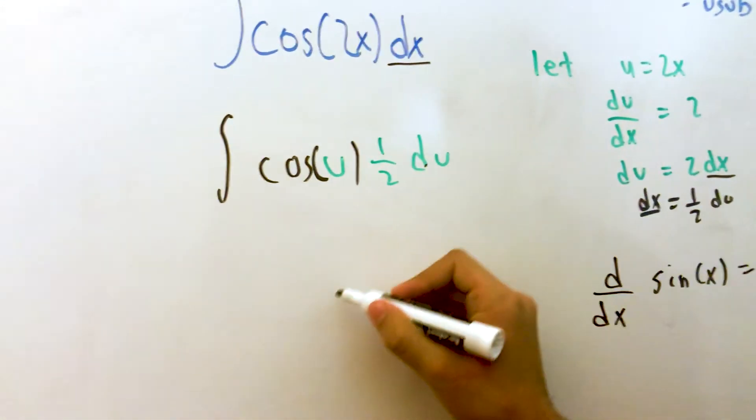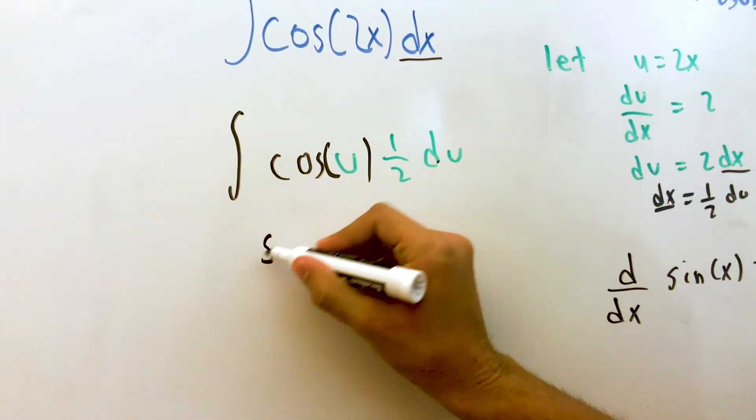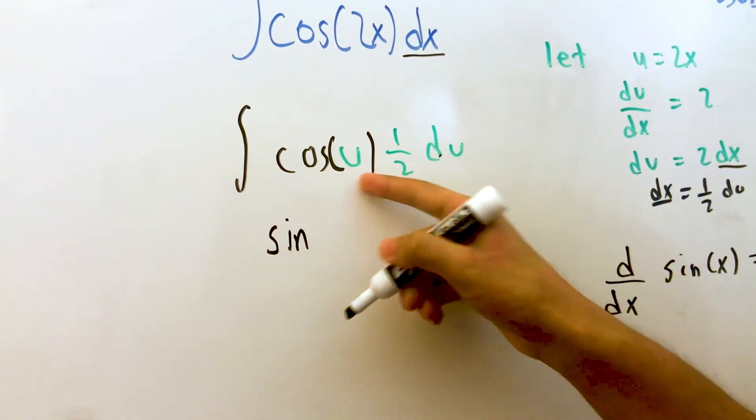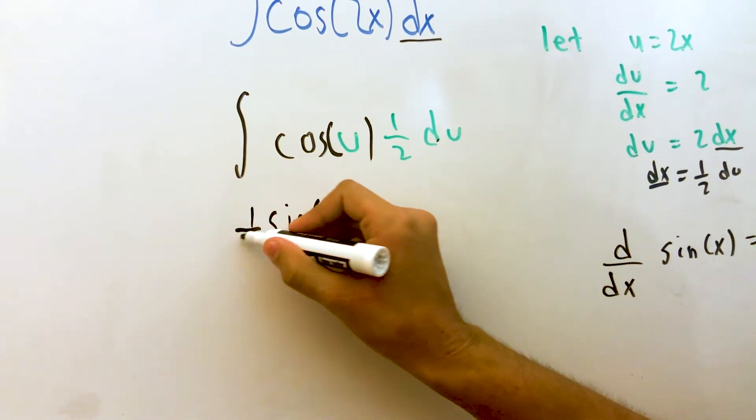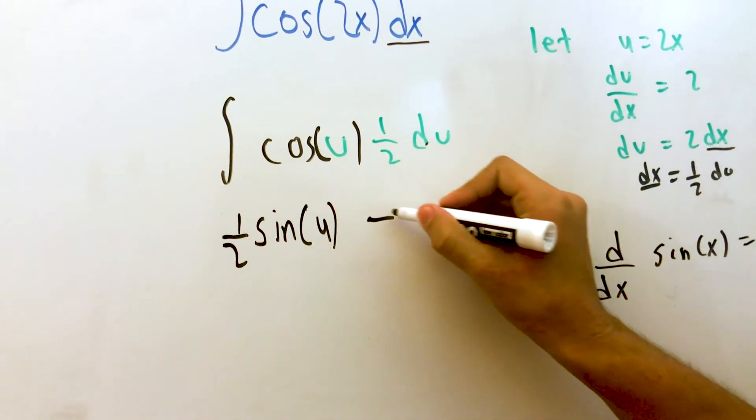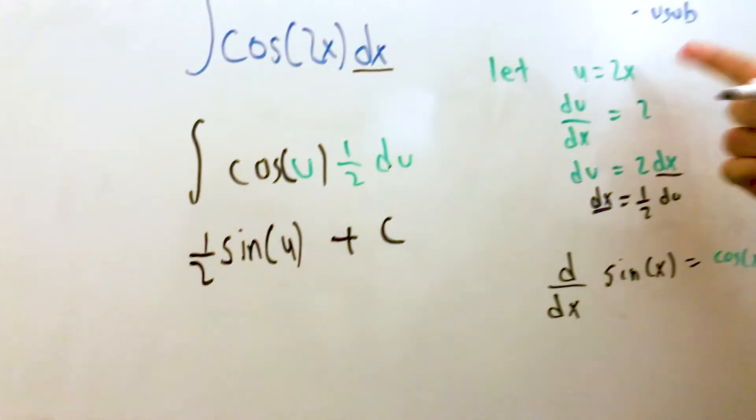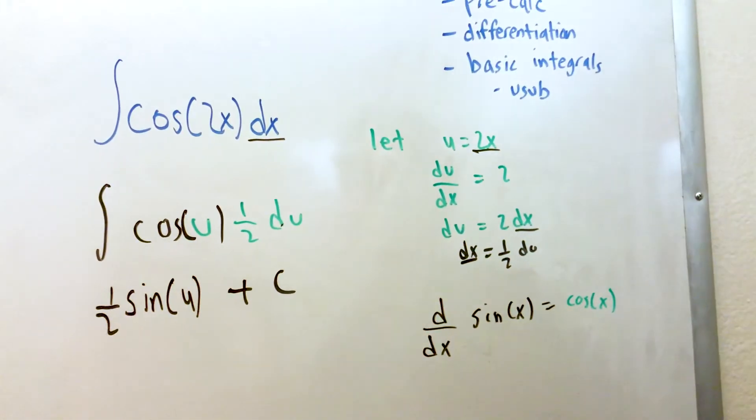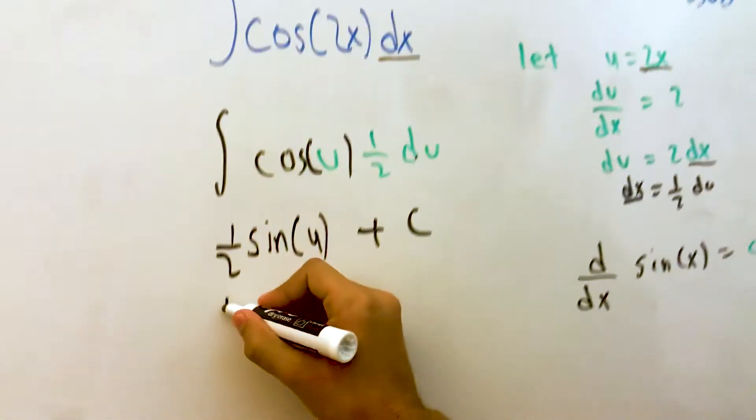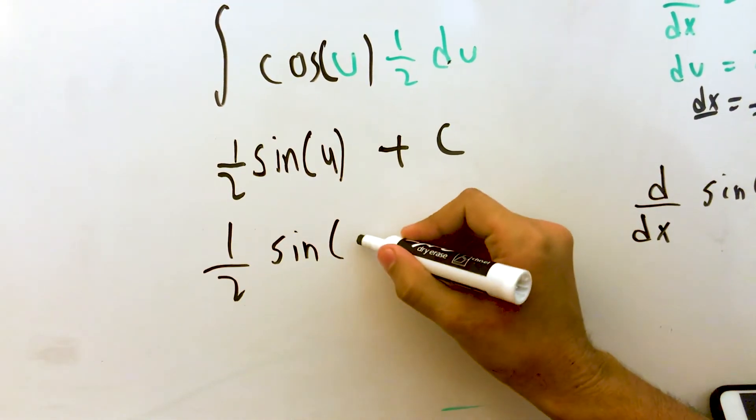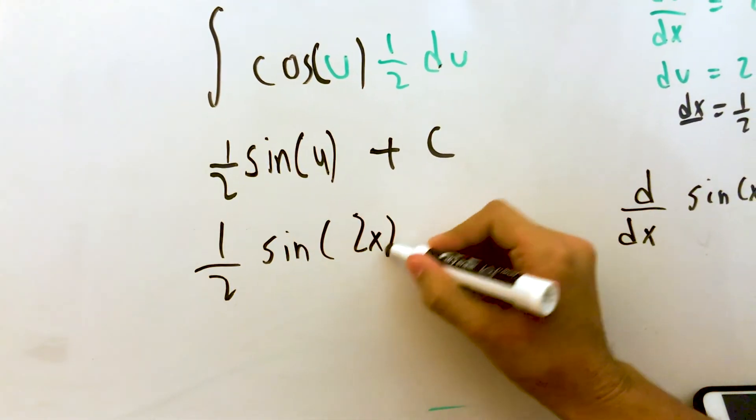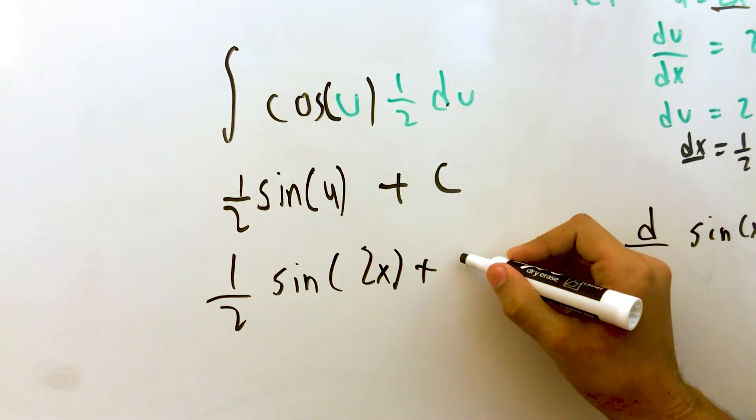So to integrate this, we're going to have sine of U, and we have to keep this 1 half plus a constant. And all we have to do is replace this 2x into the U, and we have 1 half sine of 2x plus C.